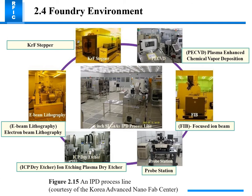The foundry environment equipment includes a KrF stepper, plasma edge, chemical vapor deposition, focused ion beam probe station, ion etching, plasma etcher, forming the IPD process line. This picture shows the Korea Advanced Nano Web Center for fabrication.